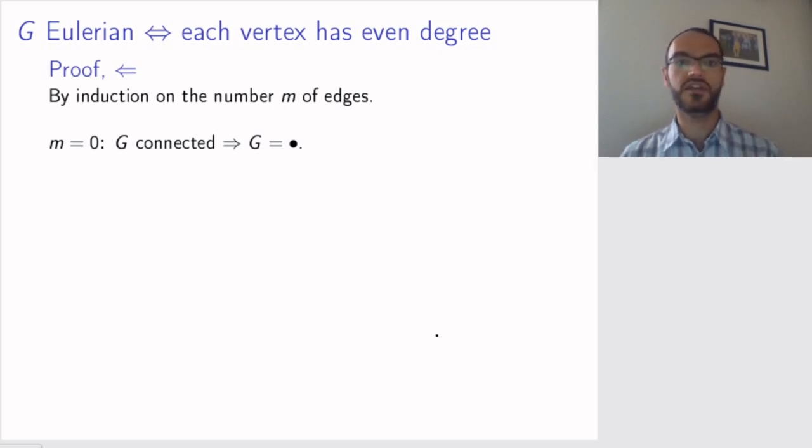Smallest number of edges is zero. Well, a connected graph with zero edges is the null graph. So it has no edges. Clearly, the empty walk is an Euler trail.